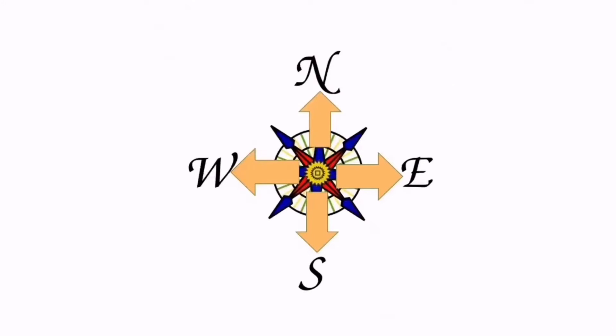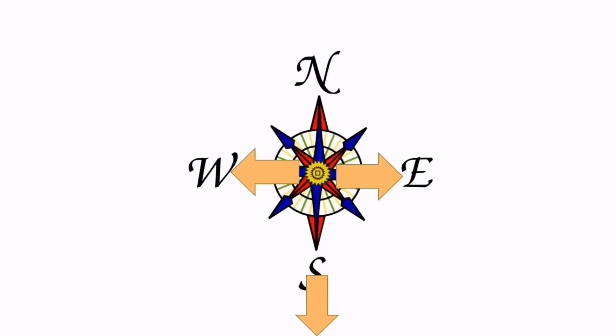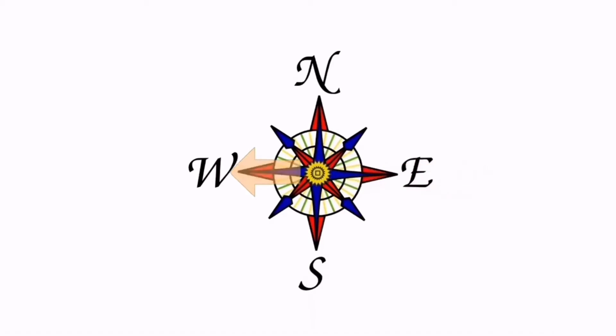N is for north, S is for south, E is for east, and W is for west.